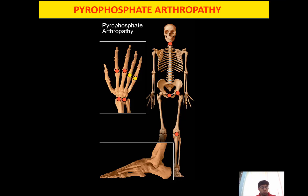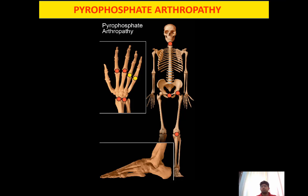In pyrophosphate arthropathy, we can see erosive changes and proliferative changes in the bone. The other term is pseudogout, which is a condition in which the patient has pyrophosphate arthropathy — the joint is involved due to calcium pyrophosphate deposition — and the patient presents with acute symptoms similar to gout, which is called pseudogout syndrome. So calcium pyrophosphate deposition can present in three forms: chondrocalcinosis, pyrophosphate arthropathy, or pseudogout.